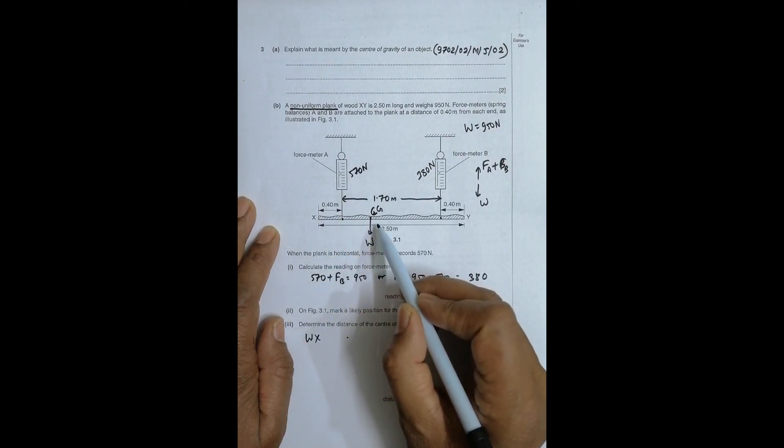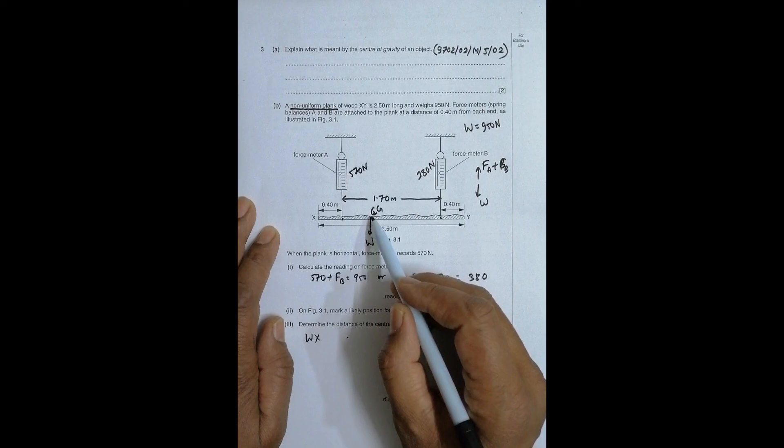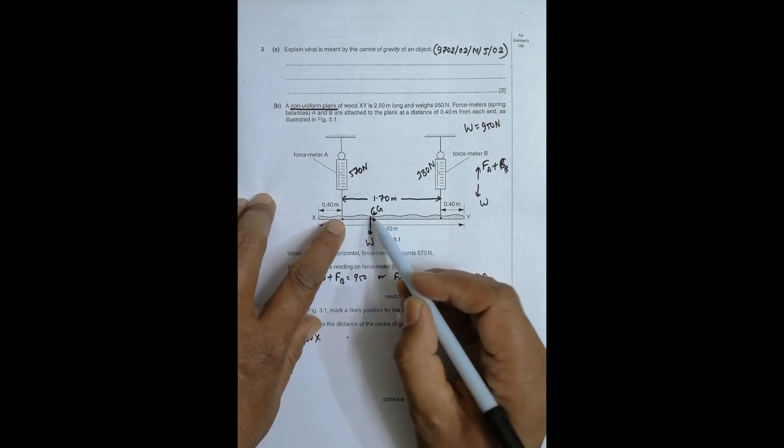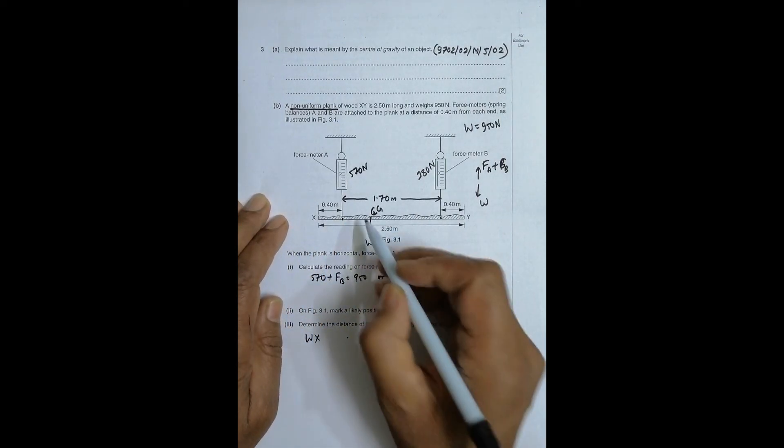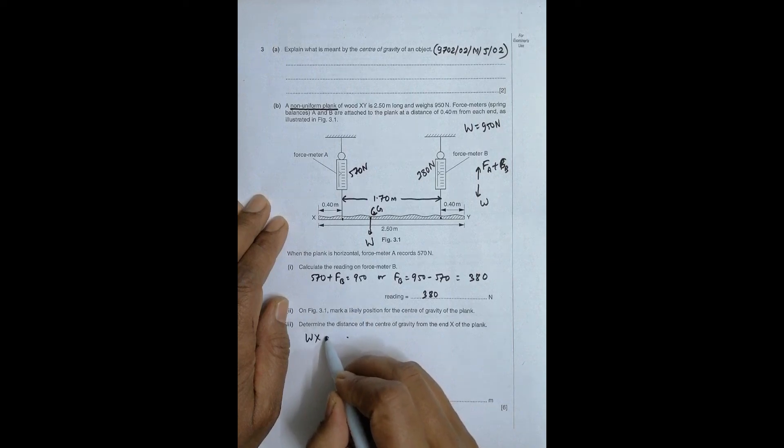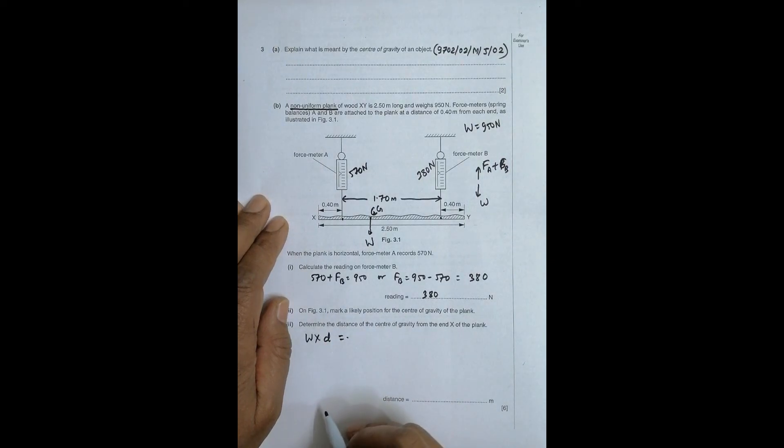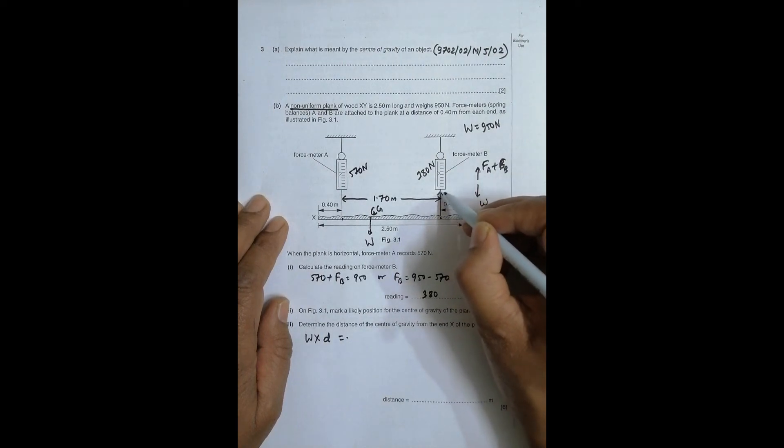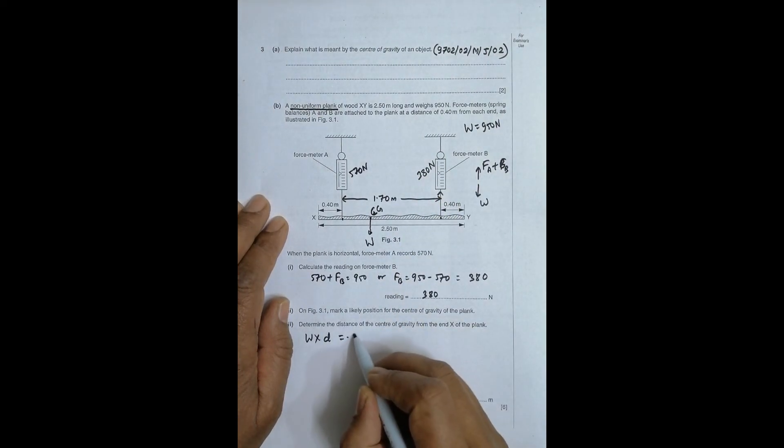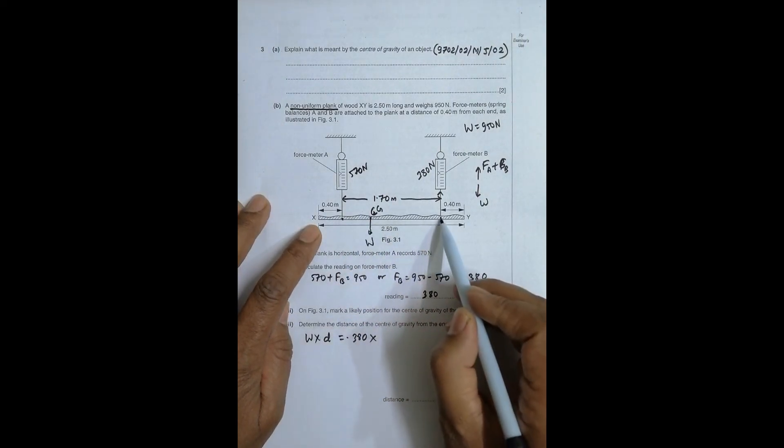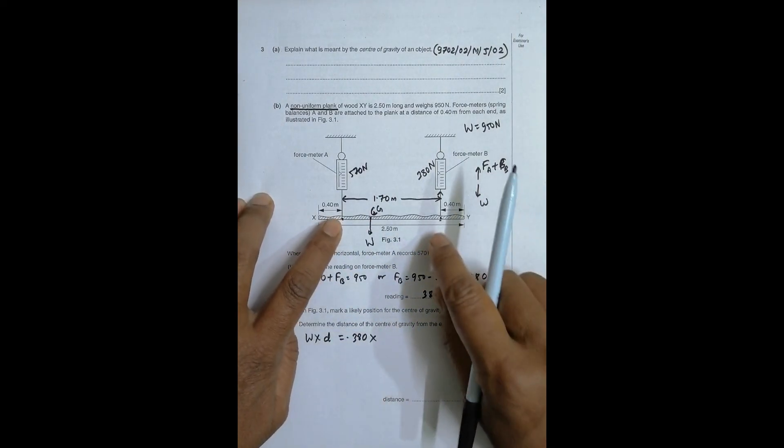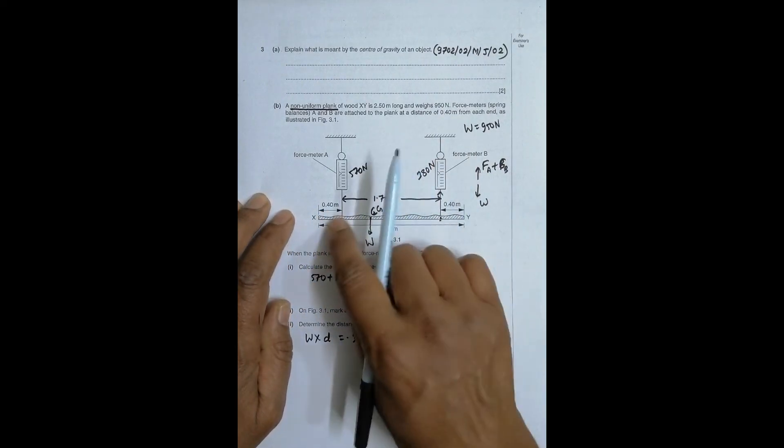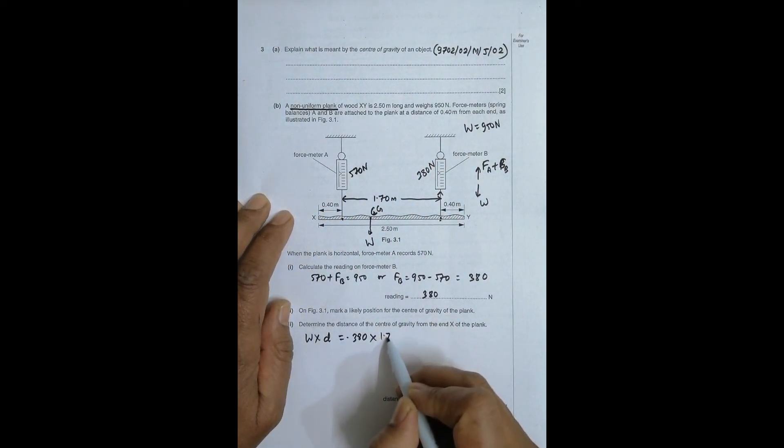Then this CG will try to move this thing in anticlockwise sense. This W will try to move it in anticlockwise sense. So that's why W into this distance, which is D, which is unknown here, equal to the force meter reads 380 Newton here. So this is 380 Newton into the distance from here to here. This will try to move this thing up.